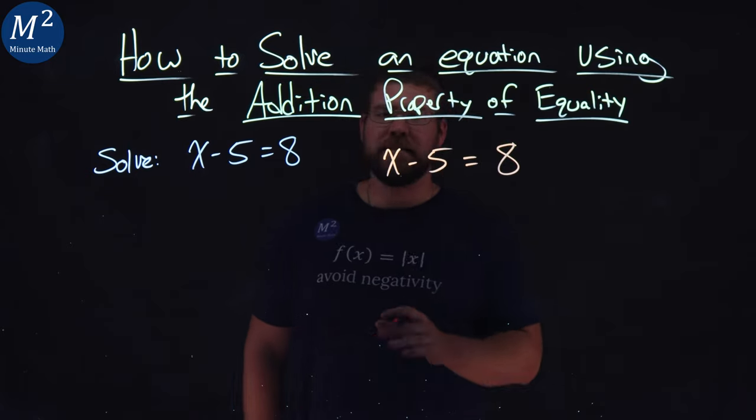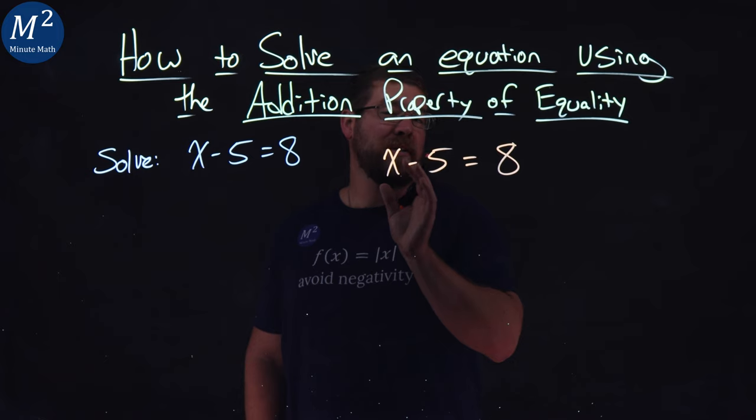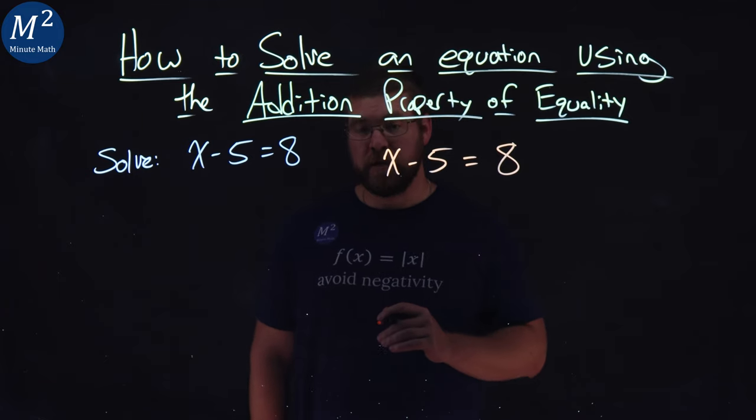Now, the addition property of equality states that we can add whatever we want to one side of the equation if we also add it to the other side of the equation.